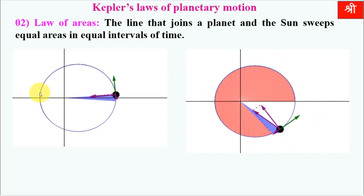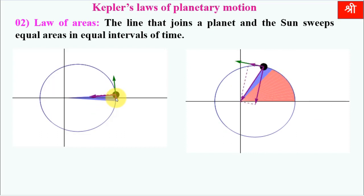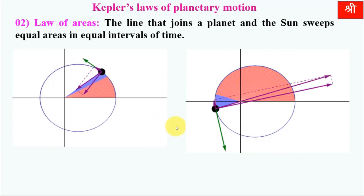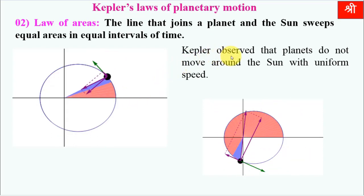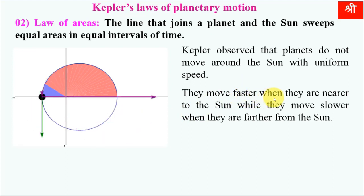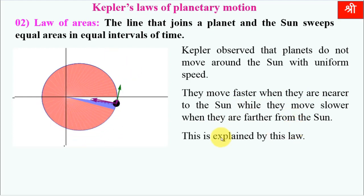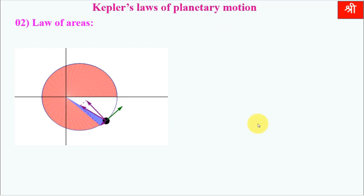When the planet is closer to the sun, its speed is higher, and when farther from the sun, its speed is lower. The planets do not move around the sun with uniform speed — they move faster when nearer to the sun and slower when farther from the sun. This is explained by Kepler's second law.